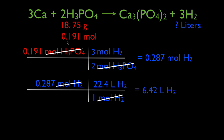That's how we figure out, starting from grams, how many liters of hydrogen gas we can produce. First, we went from grams to moles using the molar mass. Step two was converting from moles of one substance to moles of the other using the molar ratio. Step three was converting from moles of gas to liters of gas using the molar volume at standard temperature and pressure. We find that this yields 6.42 liters of hydrogen gas.